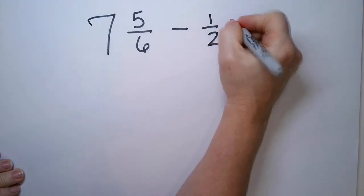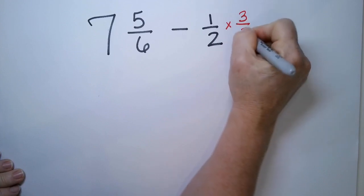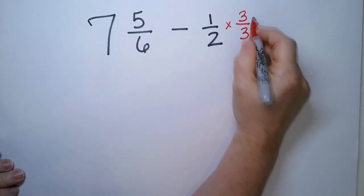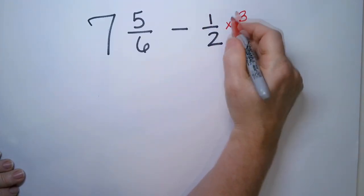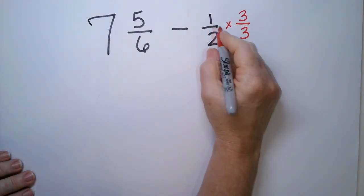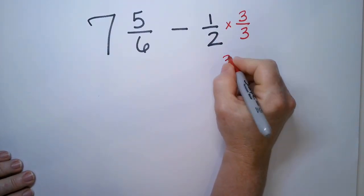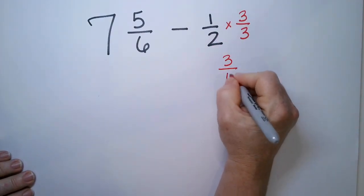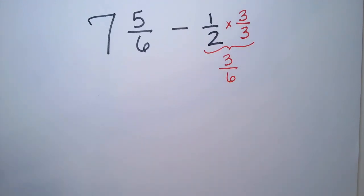So I know that if I multiply by three over three, three over three is one. So I'm going to multiply one half by a clever form of one to scale it up. So the bottom becomes a six. So three times one is three. Two times three is six.